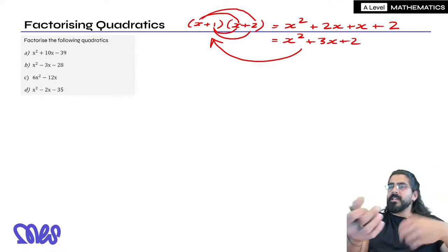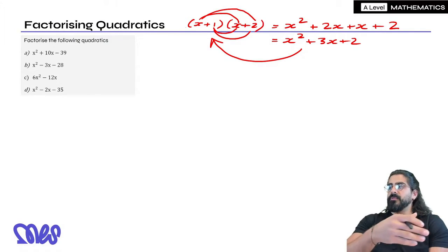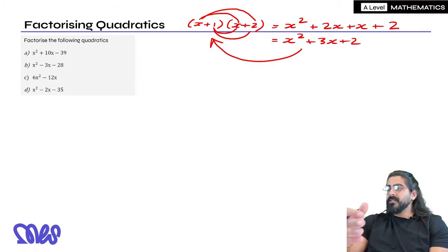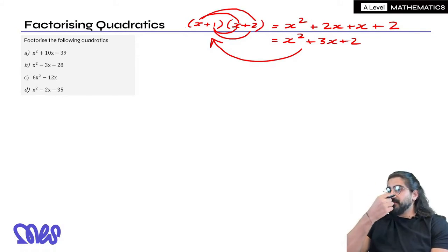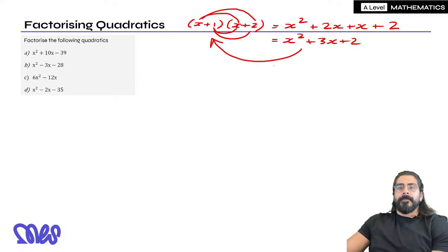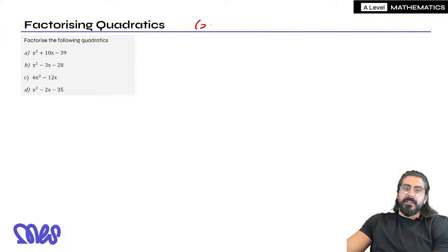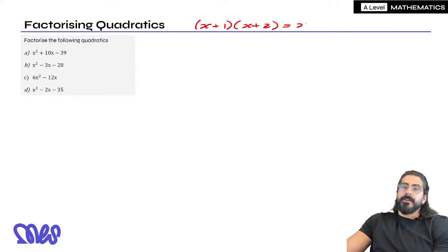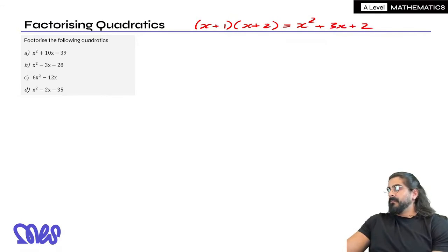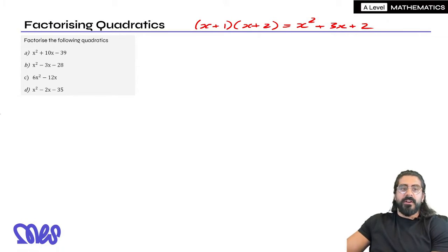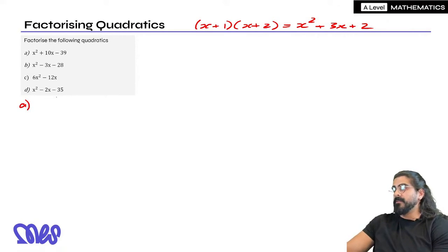It's the same as saying 12 is 6 times 2. So when we factorize, we're reintroducing the brackets. When we expanded x plus 1 times x plus 2, that gave us x squared plus 3x plus 2, and this is going to help us understand how to factorize quadratics. We're going to be progressing to the harder quadratics quite quickly.